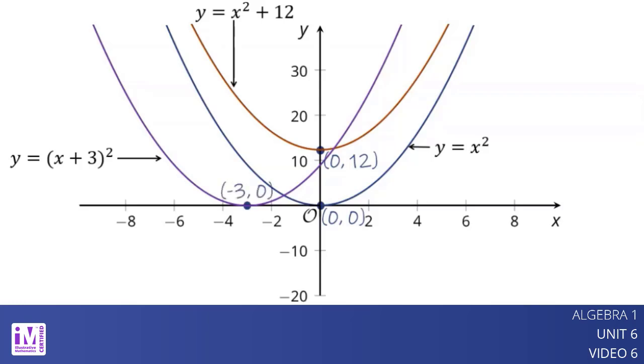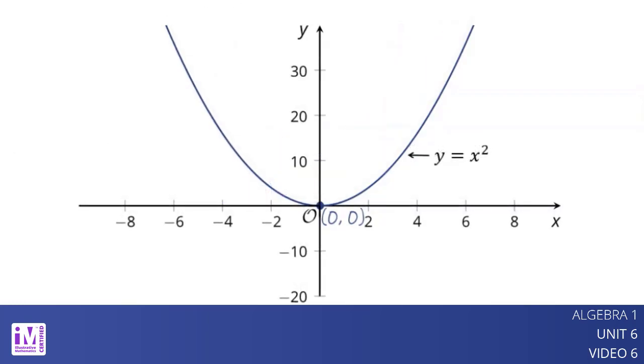We can also shift a graph both horizontally and vertically. Let's start again by looking at the graph of y equals x squared. The graph that represents y equals the quantity x plus 3 squared plus 12 will look like that for y equals x squared, but it will be shifted 12 units up and 3 units to the left.